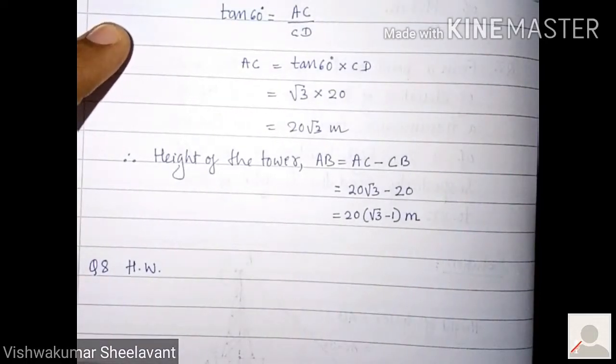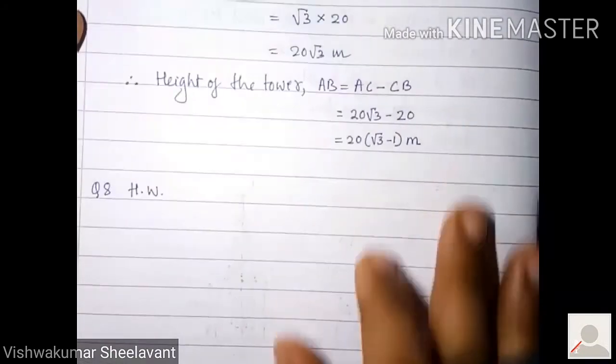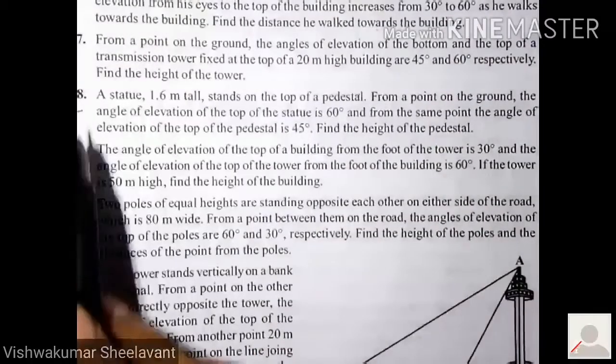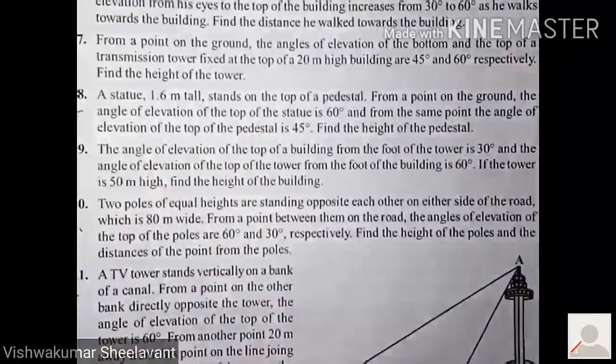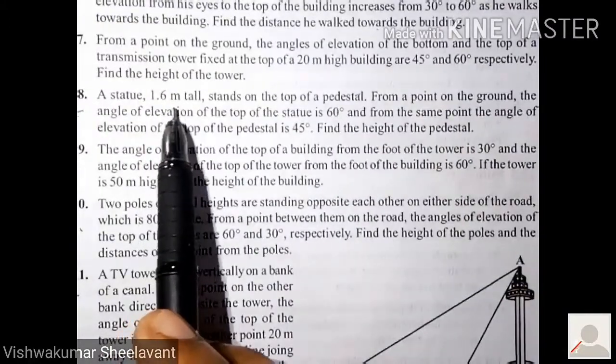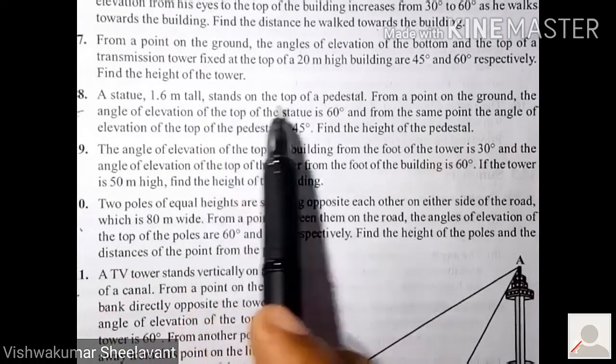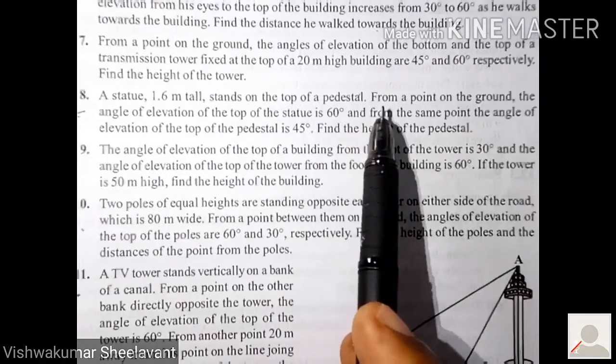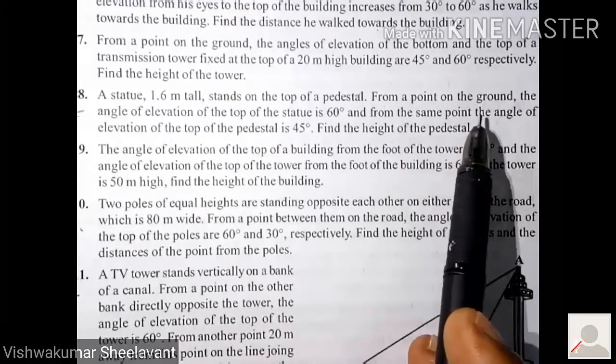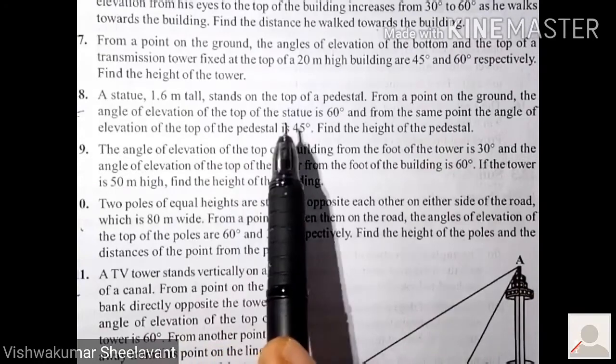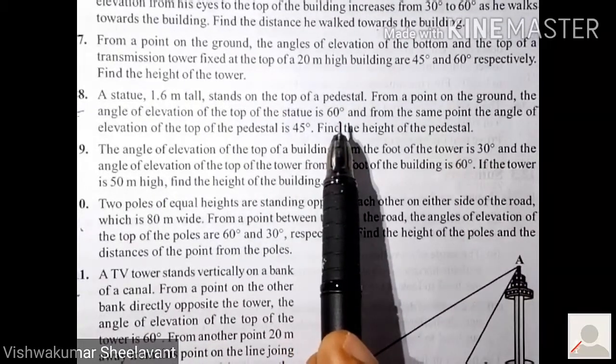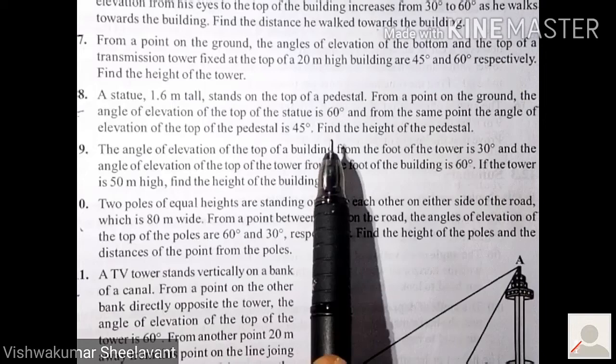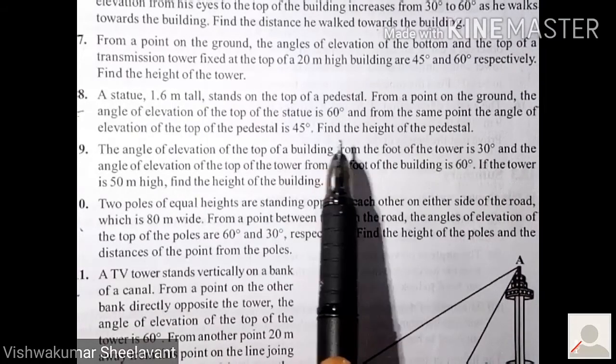Have you all solved the homework problem? It was very much similar to question number seven. Question number eight: A statue 1.6 meters tall stands on the top of a pedestal. From a point on the ground, the angle of elevation of the top of the statue is 60 degrees and from the same point the angle of elevation of the top of pedestal is 45 degrees. Find the height of the pedestal.